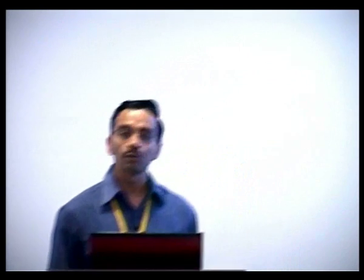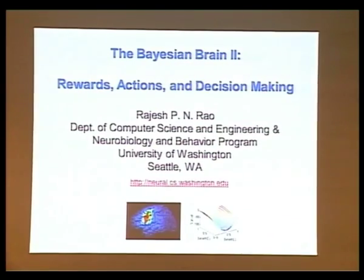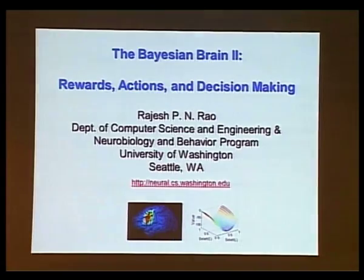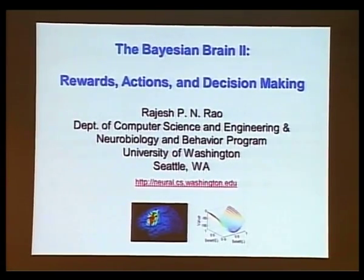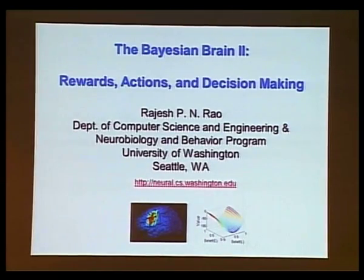We'll continue where we left off yesterday. Yesterday I talked about how people are trying to implement Bayesian inference algorithms in models of neural networks, relating that to data collected from animals and humans looking at particular brain areas. What I'll do today is try to connect that to the ultimate purpose of inference and perception, which is actions — how do you use information from your sensors to perform actions that will give you rewards?